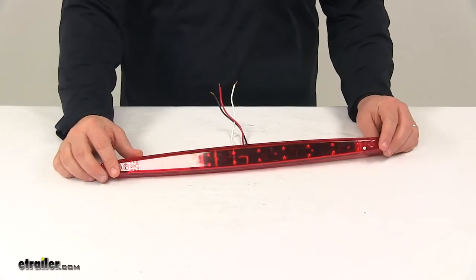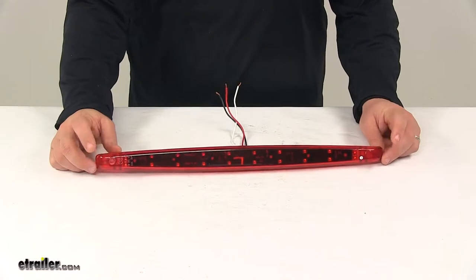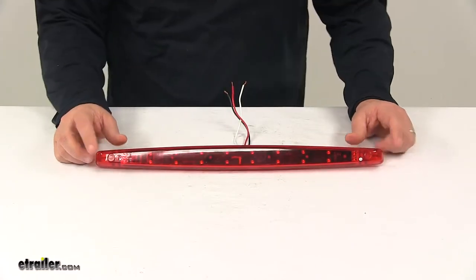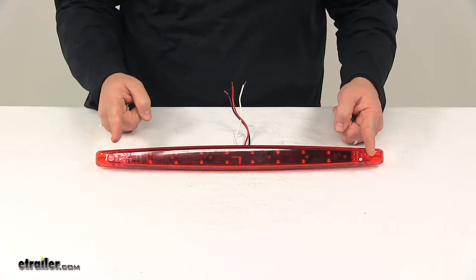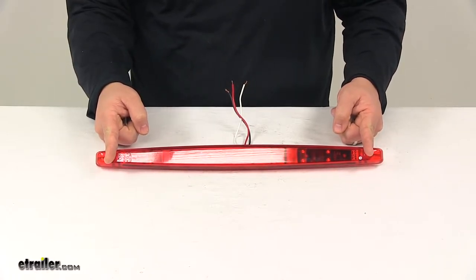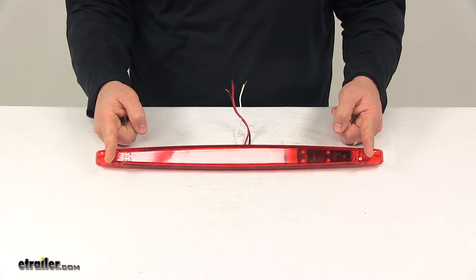It's SAE and Department of Transportation compliant. It mounts directly on the surface of the trailer. Hardware to do so is not included, but it does have two mount holes, one right here and one right here, and these are separated apart from one another on center by 15 and 7 eighths inches.